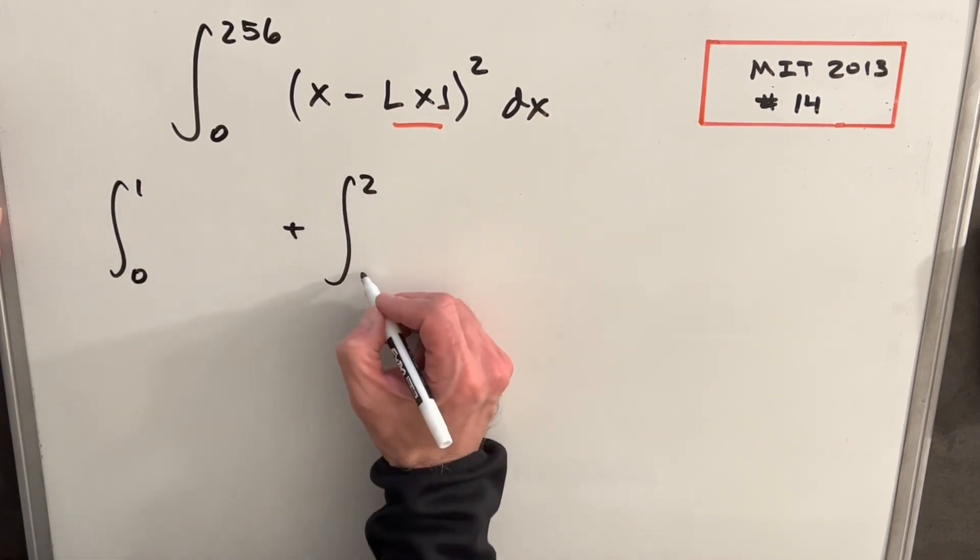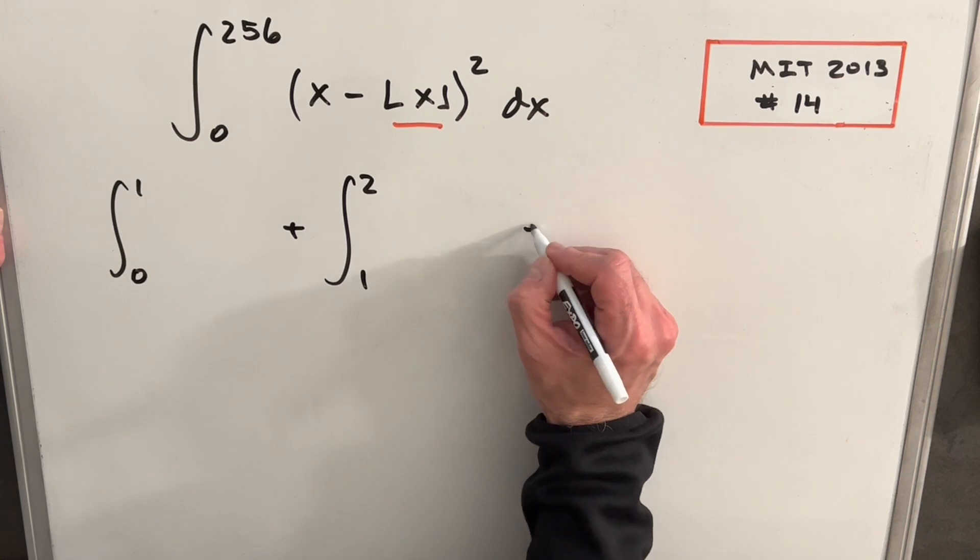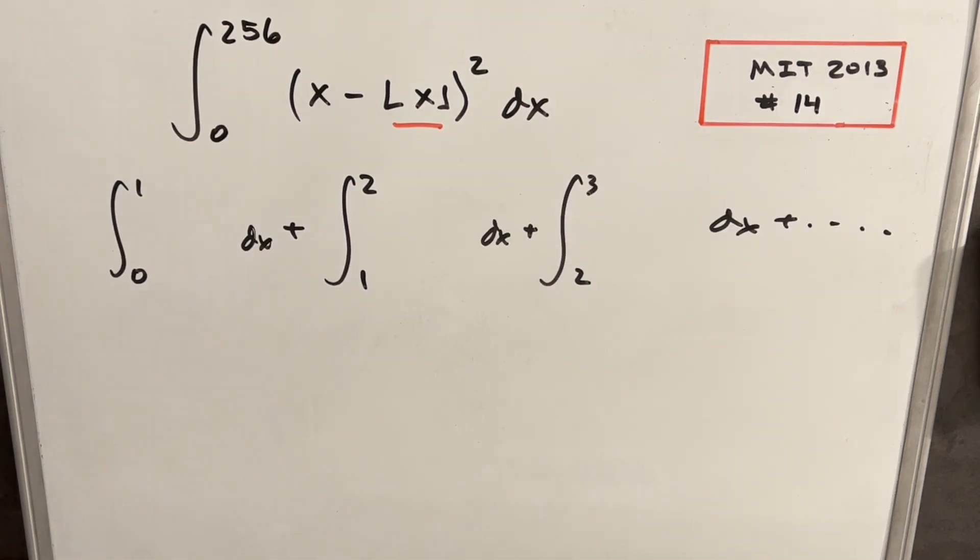Obviously we're not going to write out 256 of these, but we can look at a few and get a feel for it. So I've created this pattern where we're breaking this up now into 256 different integrals, all with just an interval 1 long.